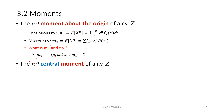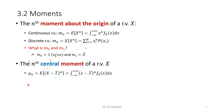We also have the nth central moment. The difference is that for central moments we subtract the average. The central moment is the expectation of (x minus x-bar) raised to power n. For central moments we use the notation mu sub n rather than m sub n.